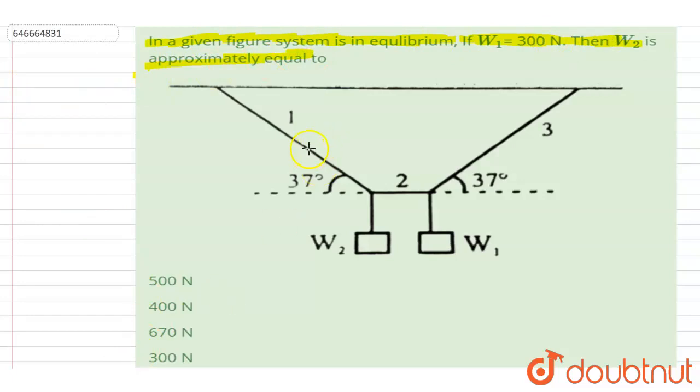If I take these two as the system, let's say here the tension is T1, in between the two the tension is T2, and here the tension is T3. You can break T1 and T3 into components: cos 37, sin 37 for each.